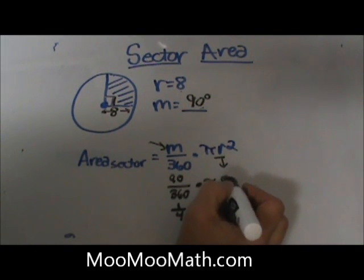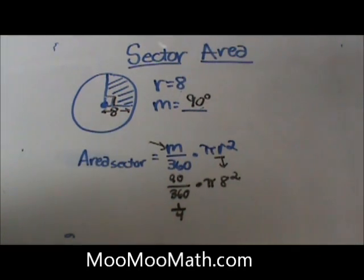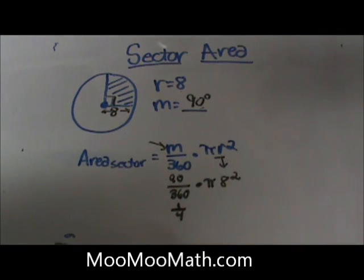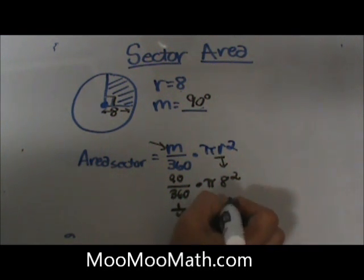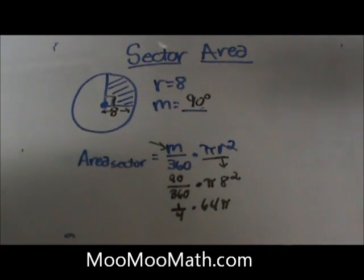We're going to plug in the radius of 8 squared. 8 squared is 64, so 64π is this portion of the formula. πr² is just 64π.